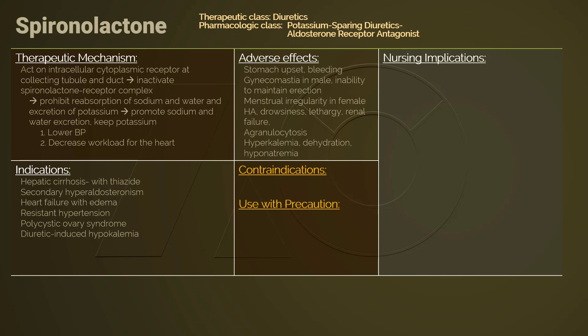Headache, drowsiness, and lethargy are central nervous system side effects. Metabolic adverse effects include renal failure, hyperkalemia, hyponatremia, and dehydration. Agranulocytosis is a hematologic side effect. Adverse effects of an aldosterone antagonist are dose-related.